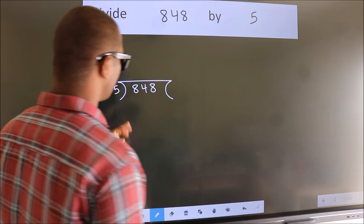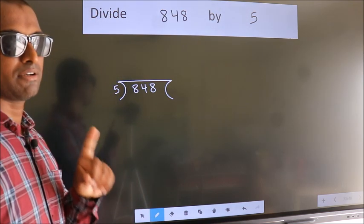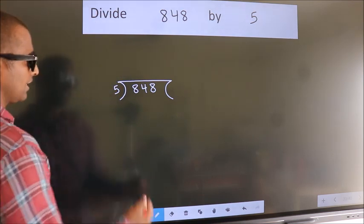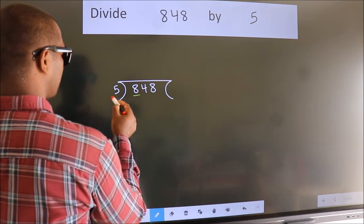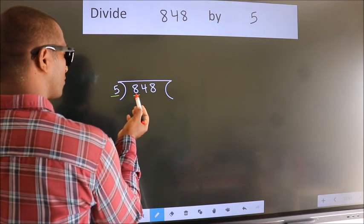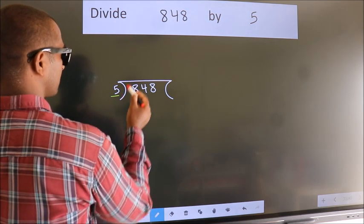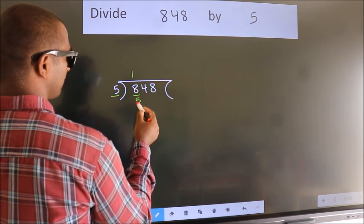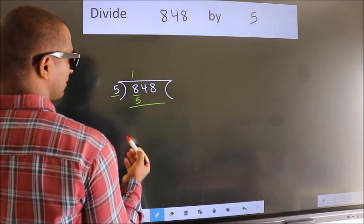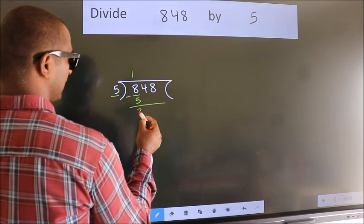This is your step 1. Next, here we have 8, here 5. A number close to 8 in 5 table is 5 once 5. Now, we should subtract. We get 3.